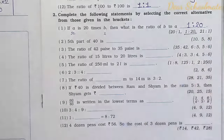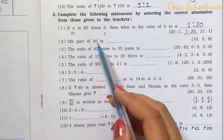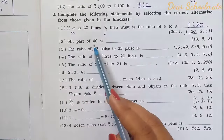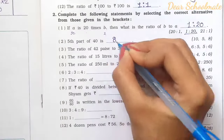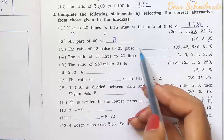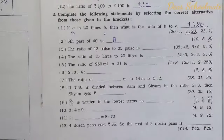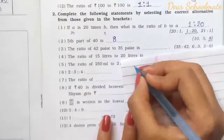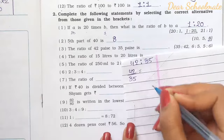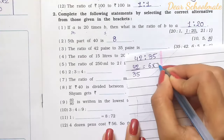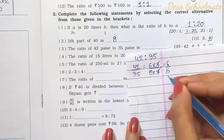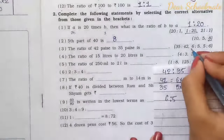Number 2: The fifth part of 40. We divide 40 by 5. 8 fives are 40, so the answer is 8. Number 3: The ratio of 42 paise to 35 paise. We write 42 by 35 and find the simplest form: 6 sevens are 42 and 5 sevens are 35. After cancellation, the ratio is 6 is to 5.